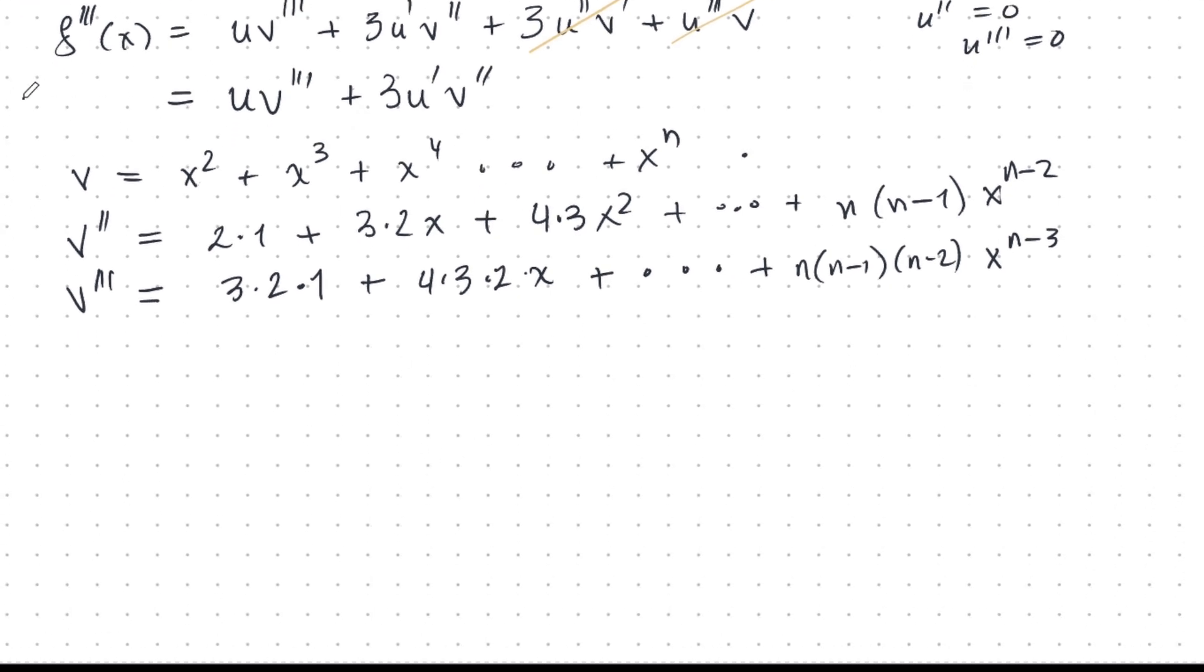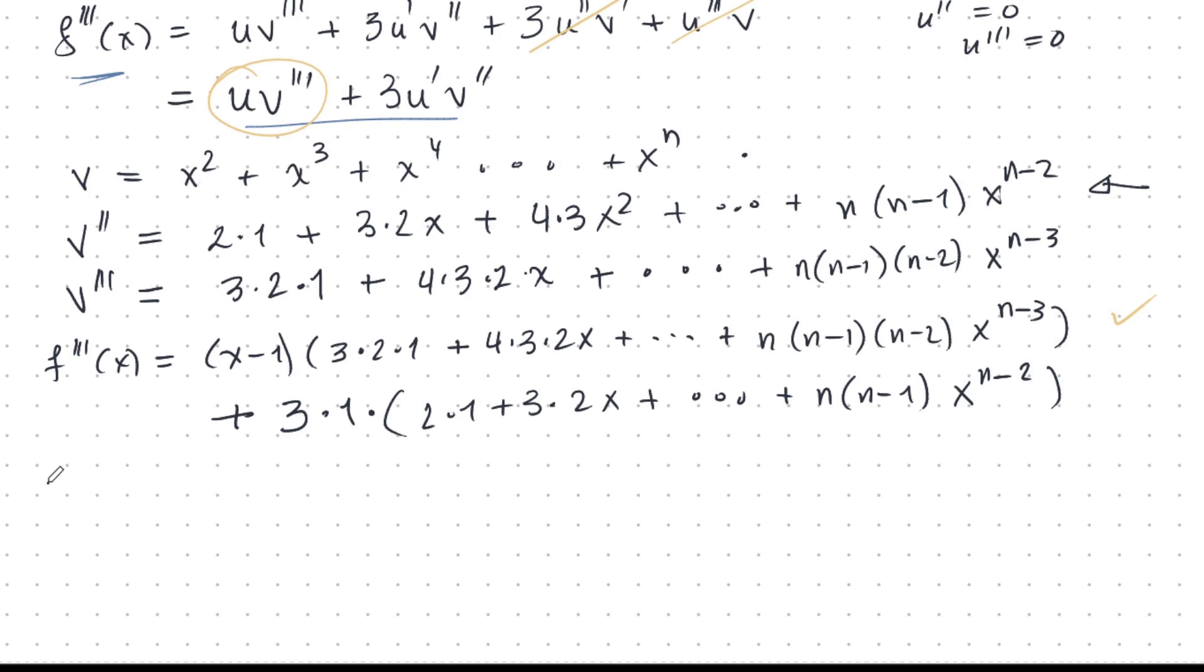So now let's plug everything into our formula for the third derivative of f. I got it. I got my first term here. That's this. And now we have to add the second term. That's 3 times u prime. But u prime is just 1. Now v prime prime. What's that? Well, we have computed it right here. And there we have it.